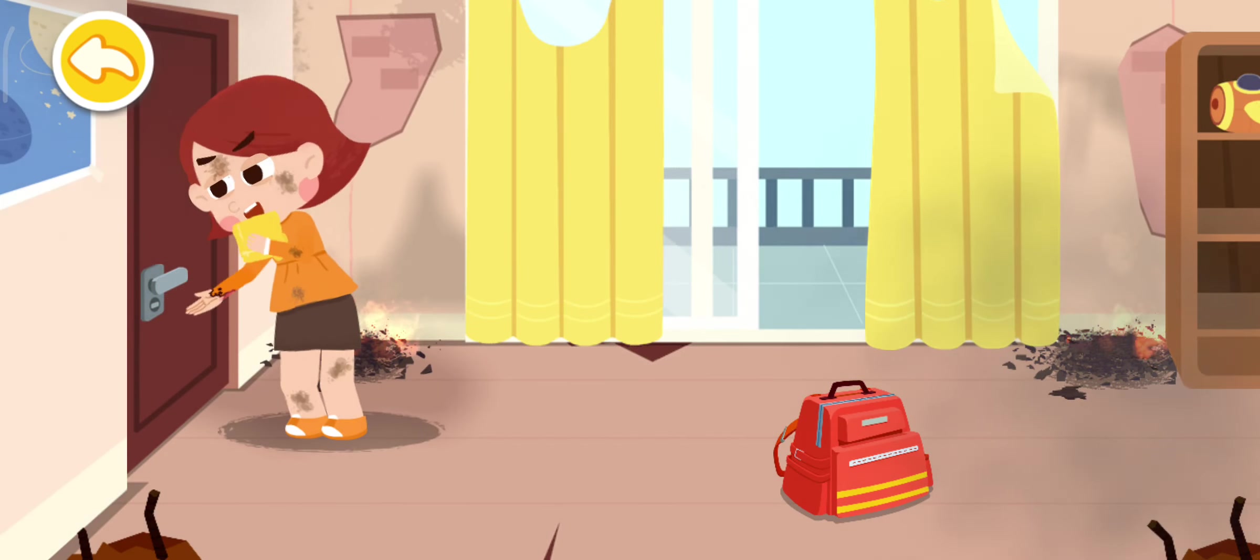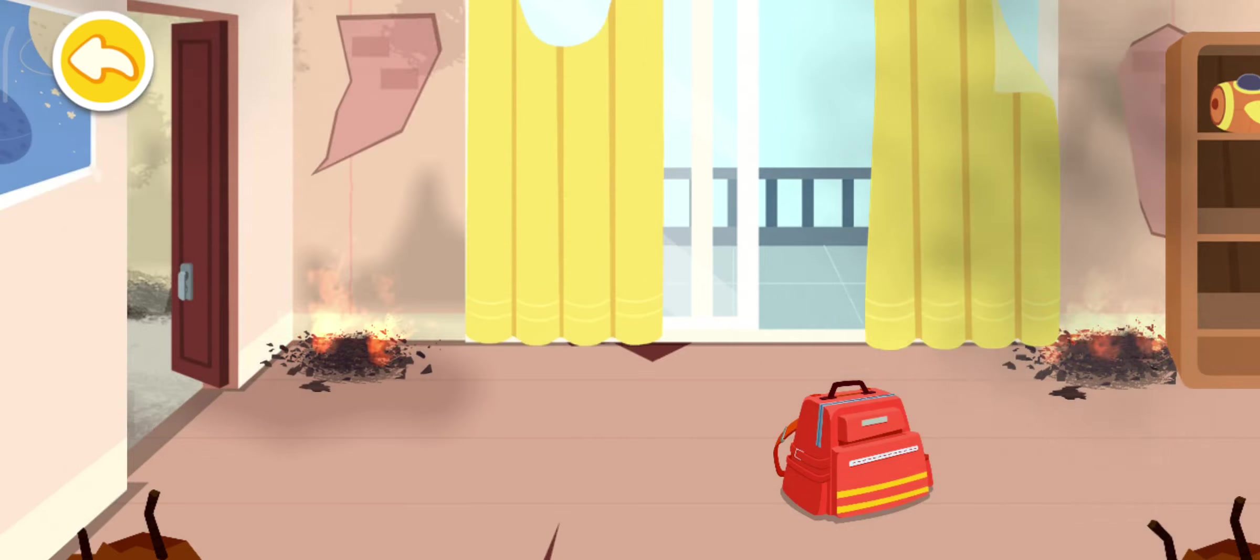Touch the doorknob with the back of your hands. If the doorknob is not hot, then check if there's smoke in the corridor. If there's no smoke, evacuate as quickly as possible.